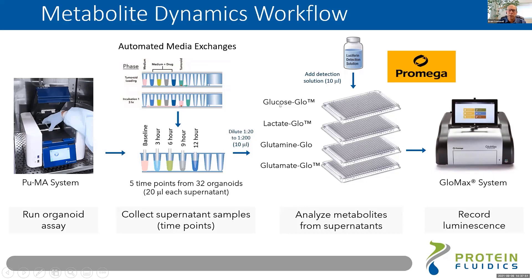From one flow chip, which has 32 samples, you can generate up to six or seven time points per sample, giving you over 200 different data points for an assay — really allowing you to map out the metabolism dynamics.